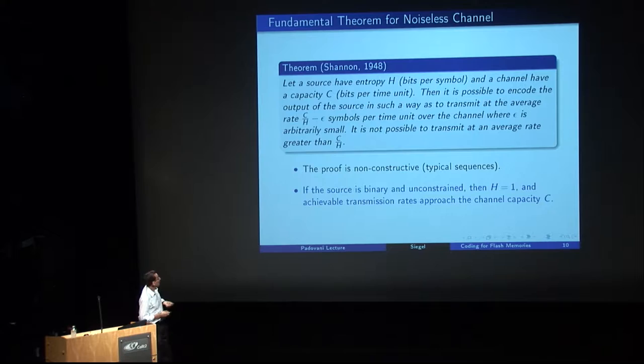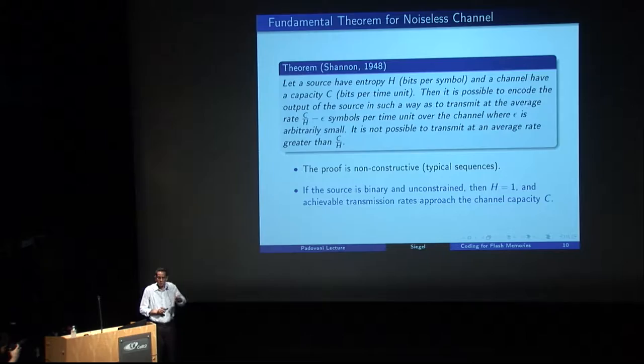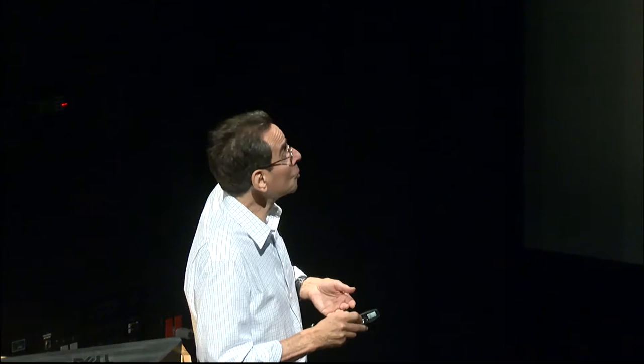Shannon does briefly mention one example of a source and code applicable to the telegraph channel. The source is the English language and the code is Morse code — a combined source and constrained channel code for the English language used on the telegraph channel.